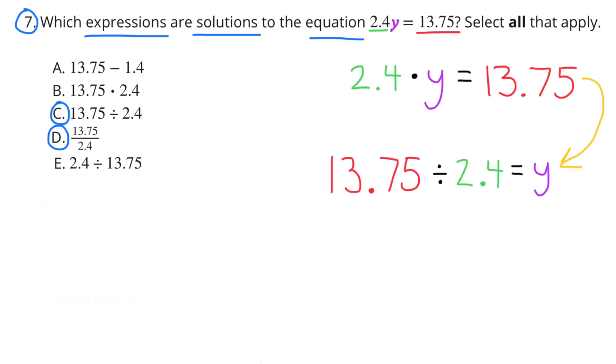Number 7. Which expressions are solutions to the equation 2 and 4 tenths times Y equals 13 and 75 hundredths? Select all that apply. Well, 2 and 4 tenths Y is the same as 2 and 4 tenths times Y, and that equals 13 and 75 hundredths. I can rewrite that as 13 and 75 hundredths divided by 2 and 4 tenths equals Y.